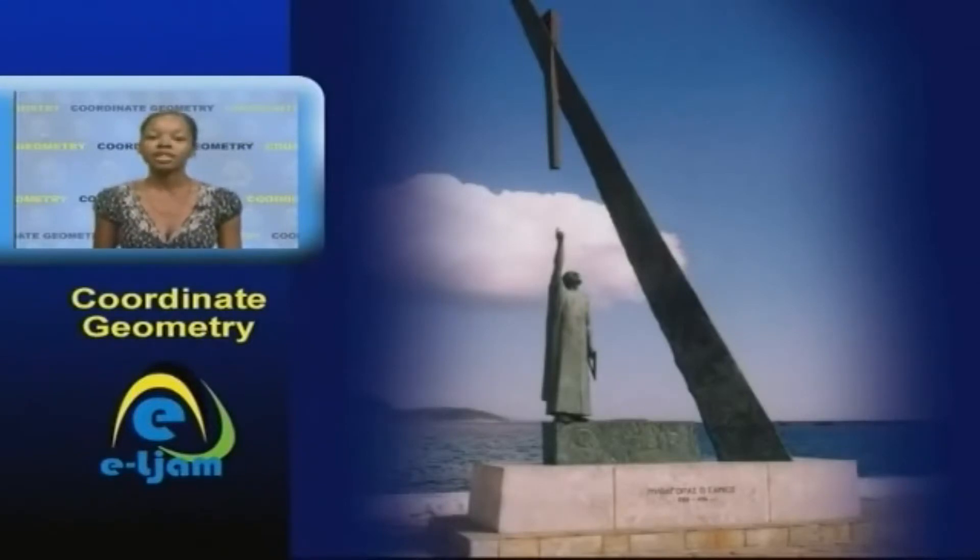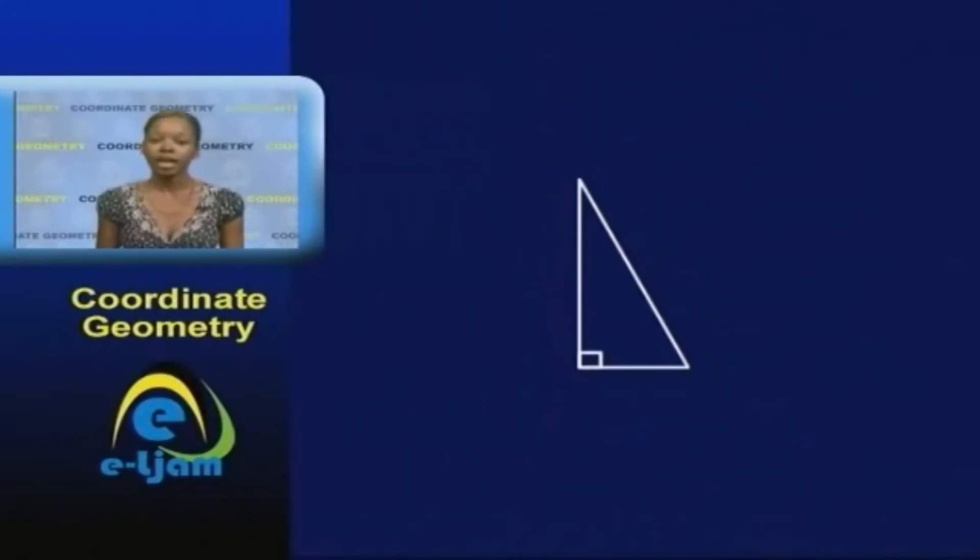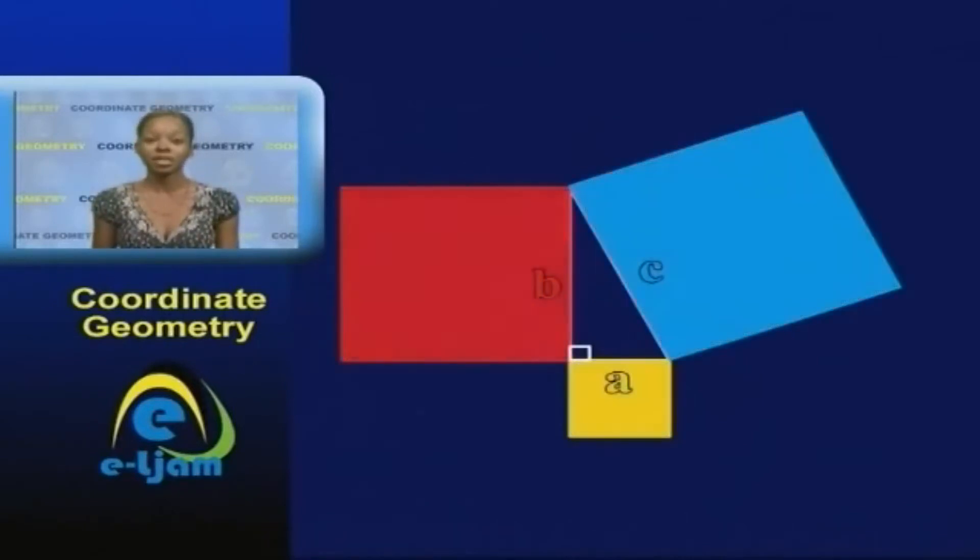He demonstrated that if a triangle is a right-angled triangle, and you make a square on each of the three sides, the largest square has the exact area as the other two squares put together.